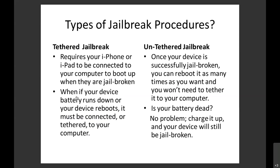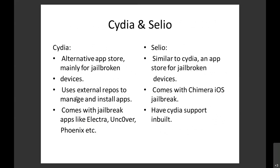On a normal device, only the App Store is available for installing applications. Once you jailbreak, you get access to a third-party app store called Cydia. Based on the jailbreak technique used, you get either Cydia or Sileo. If you use tools like Electra, Unc0ver, or Phoenix, Cydia is available. If you use Chimera iOS jailbreak, Sileo comes with it. These third-party app stores provide plugins and customized applications.